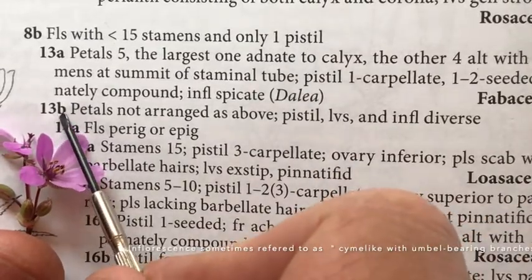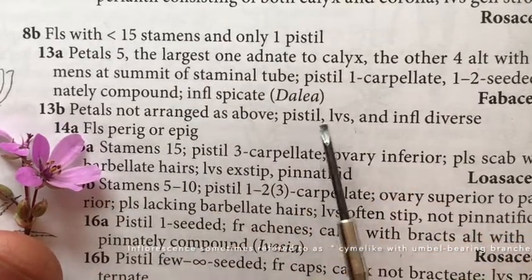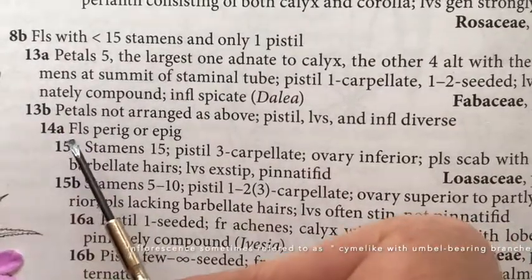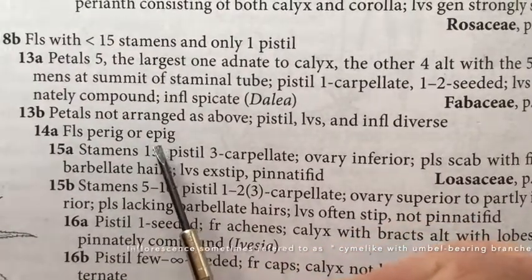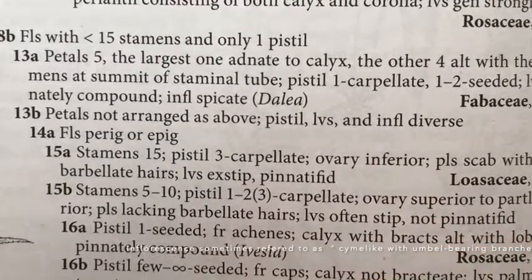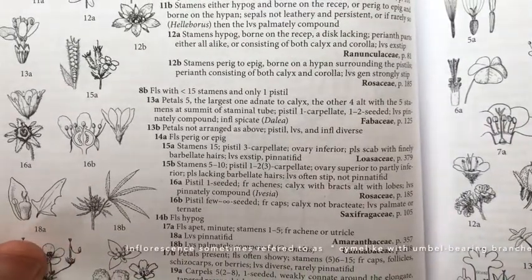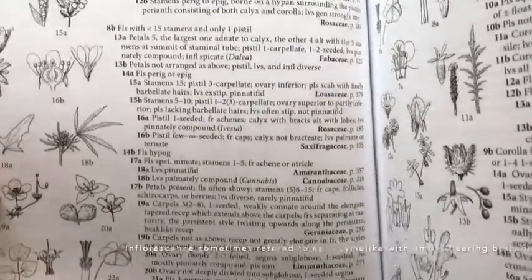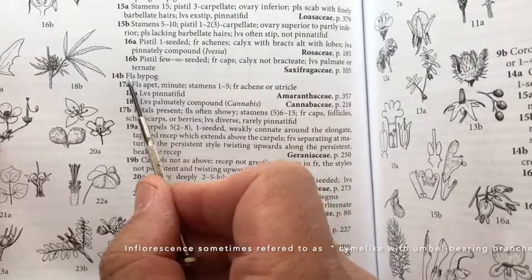This is a classic Hitchcock 'other than' couplet: petals not arranged as above, pistil, leaves, and inflorescence diverse - in other words, just otherwise. 14A is asking us if our flower is perigynous or epigynous, which has to do with a flower that has an inferior or partially inferior ovary, versus hypogynous, which is a superior ovary. In our case, we've already determined we have a very clearly superior or hypogynous ovary, so we can go with flowers hypogynous.